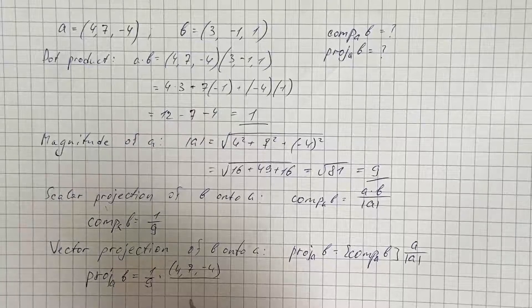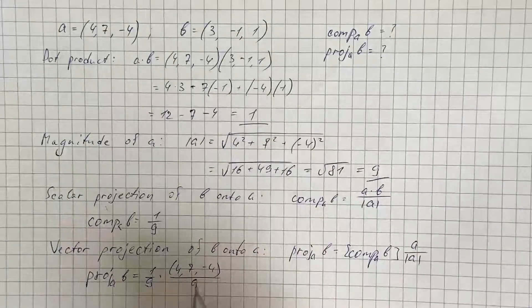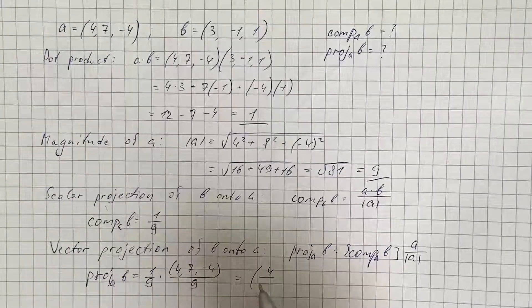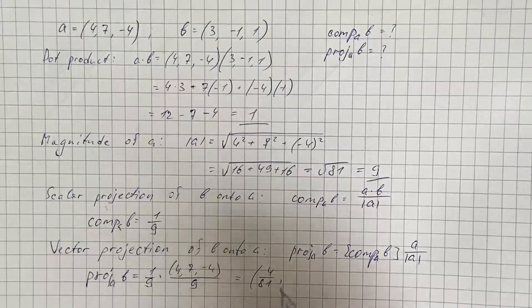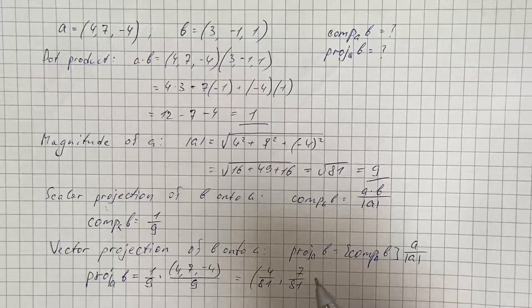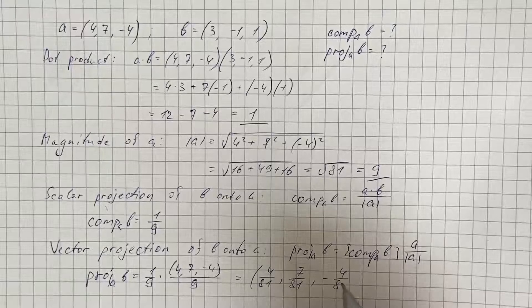And over magnitude of a which is 9. And therefore we get vector 4 over 81, 7 over 81, and negative 4 over 81.